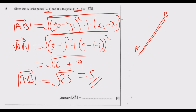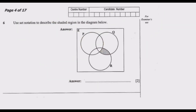Let us move to question six. Use set notation to describe the shaded region in the diagram. Looking at the diagram, the shaded region comes from Q intersection R, but excludes the part that is also in P. So we start with Q∩R as the entire region, and then remove whatever is found in P.